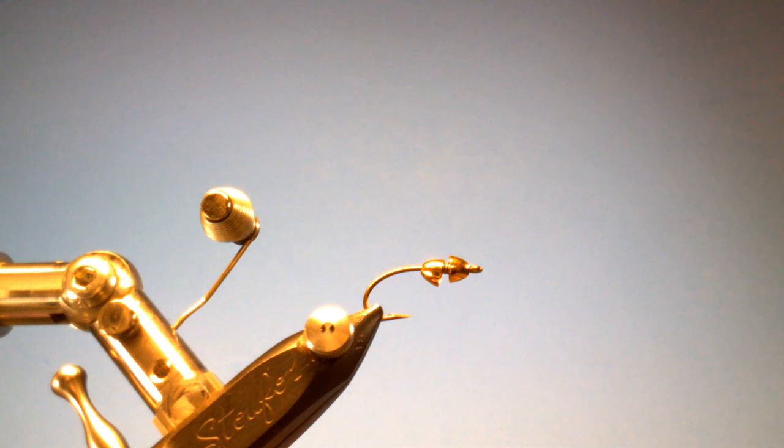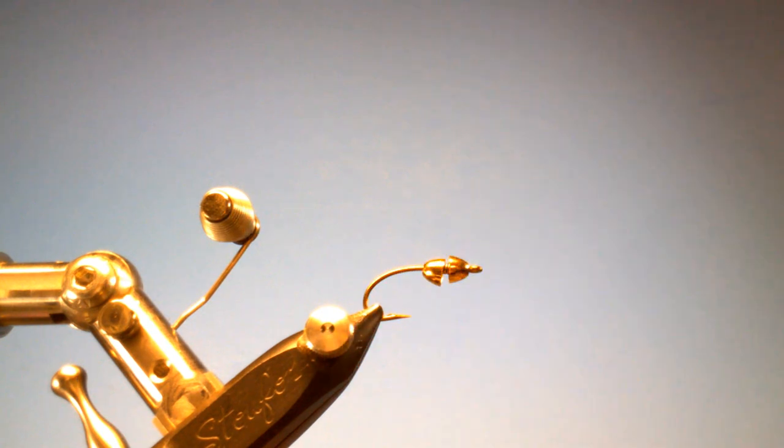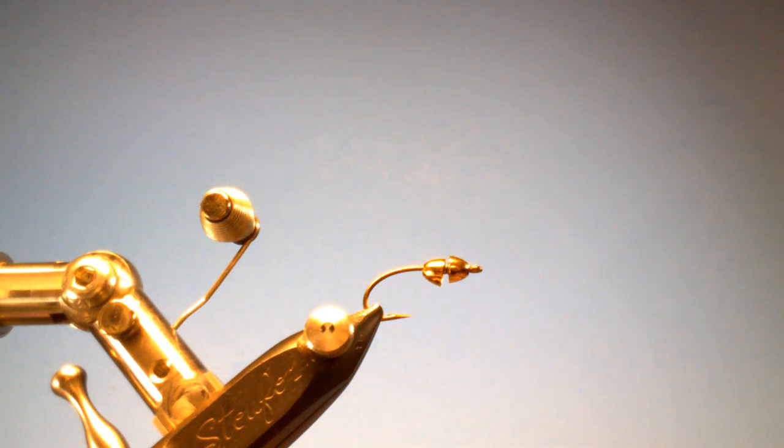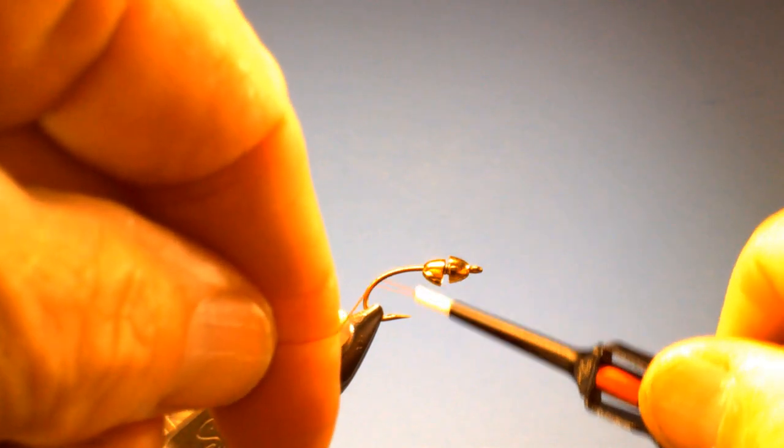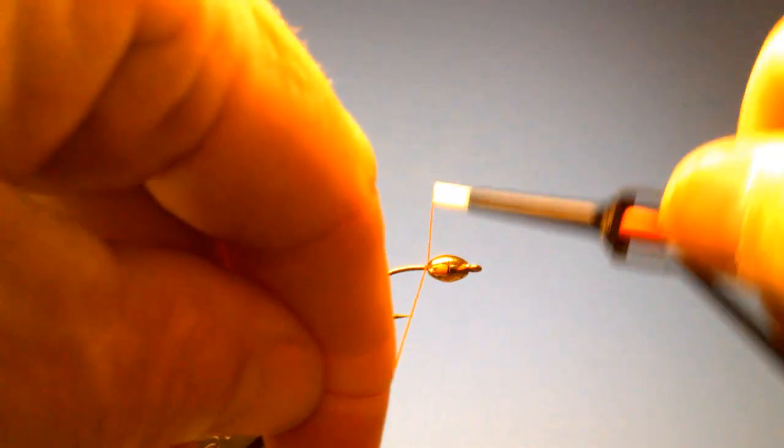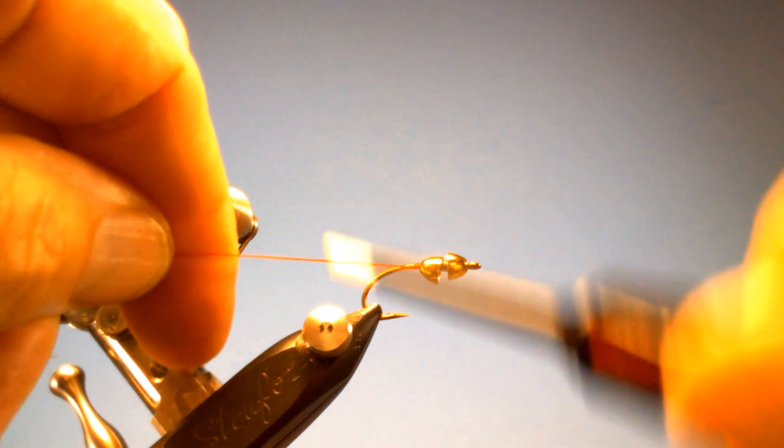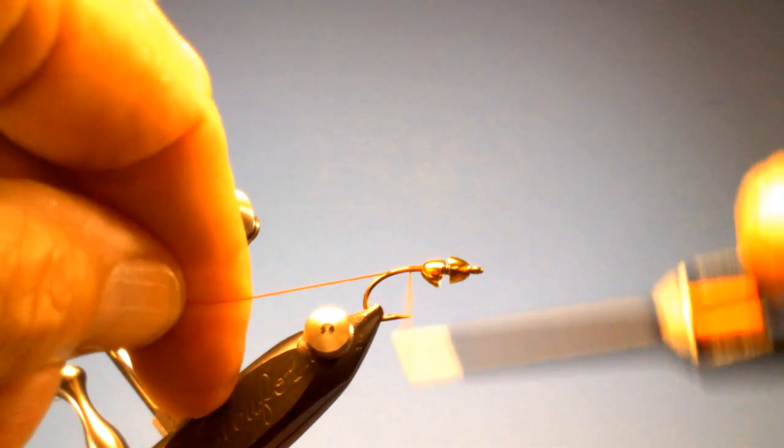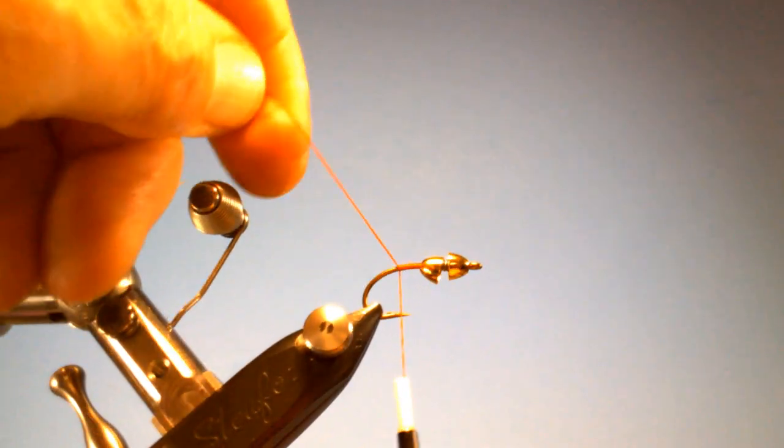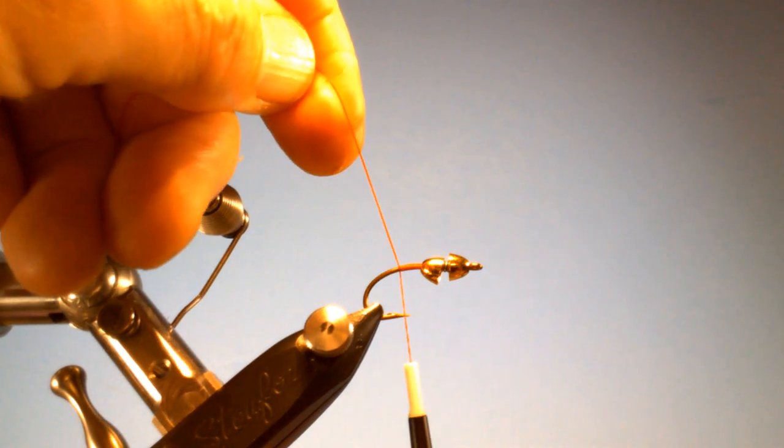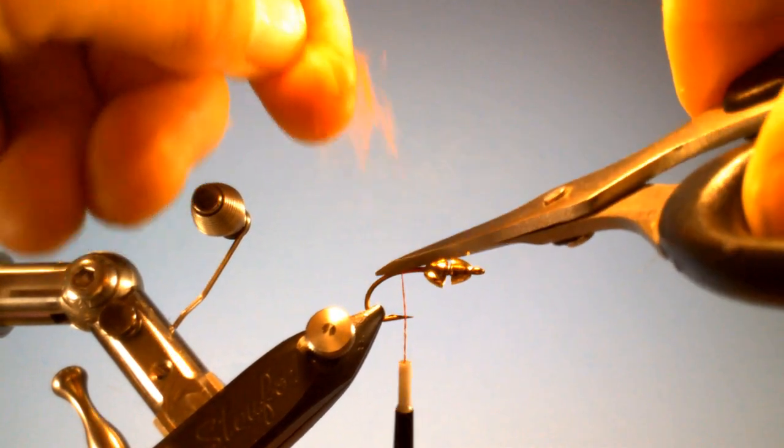And then, as you had seen on the other material, I'm using 210 denier to help push this cone in place. And I'm going to use red. We'll cut the tag end off.